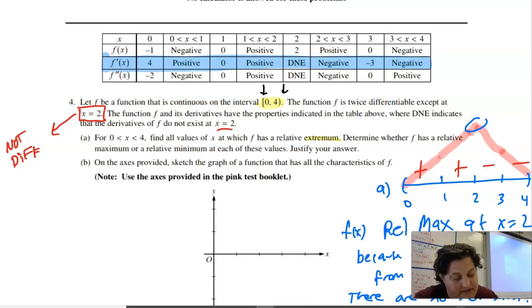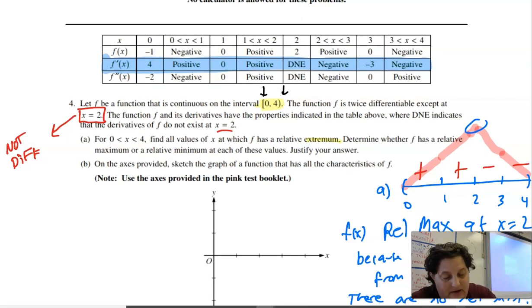Part B, on the graph that's provided, sketch a graph of the function that has all the characteristics. They'll give you some points. Here we go. I got zero, negative one. I've got one zero. I've got two two. And I've got zero at three. And it does go to four. I don't know what it's doing at four, but there's my points.